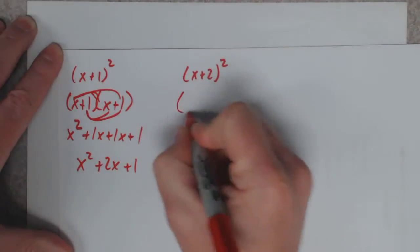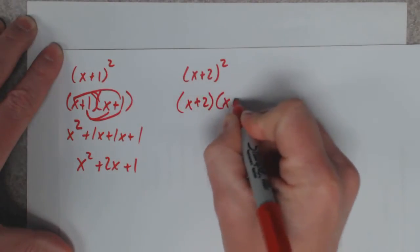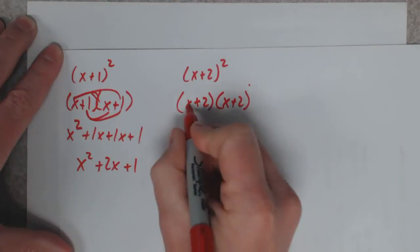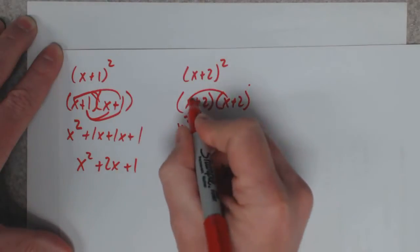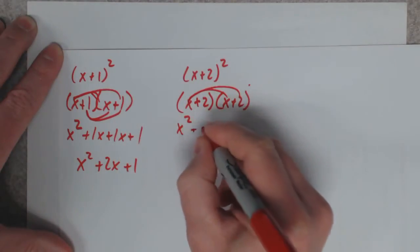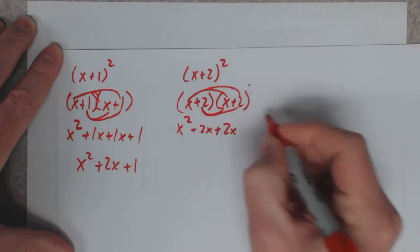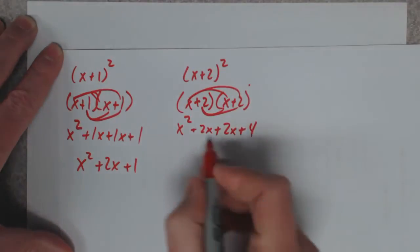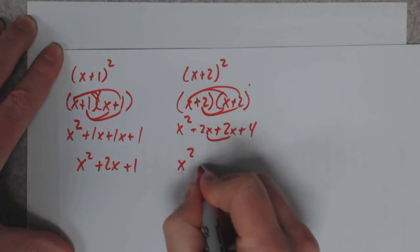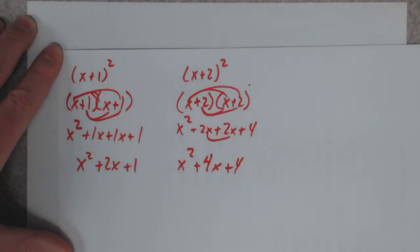Let's try it again, drawn out version. x times x is x squared, x times 2 is 2x, 2 times x is 2x, 2 times 2 is 4. Those guys go together. x squared plus 4x plus 4.